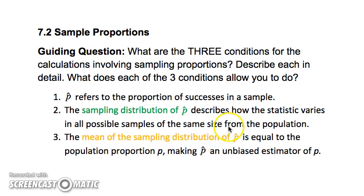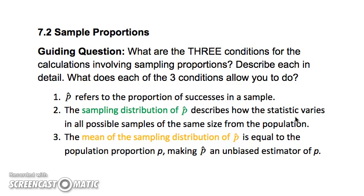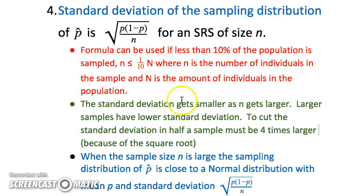For sampling distributions of sample proportions, the three conditions are what you need to focus on — that's what your multiple choice questions will cover. Notice that p-hat — anything with a hat above it, so we'll have x-bar and p-hat — refers to the sample. Anything without the hat refers to the population. So we're using p-hat to estimate p, the true proportion in the population. The sampling distribution of p-hat describes how the statistic varies in all possible samples of the same size from the population. If we have an unbiased estimator, the mean of that sampling distribution equals the true mean. For p-hat, the standard deviation is the square root of p times (1 minus p) over n, if we know the true proportion.